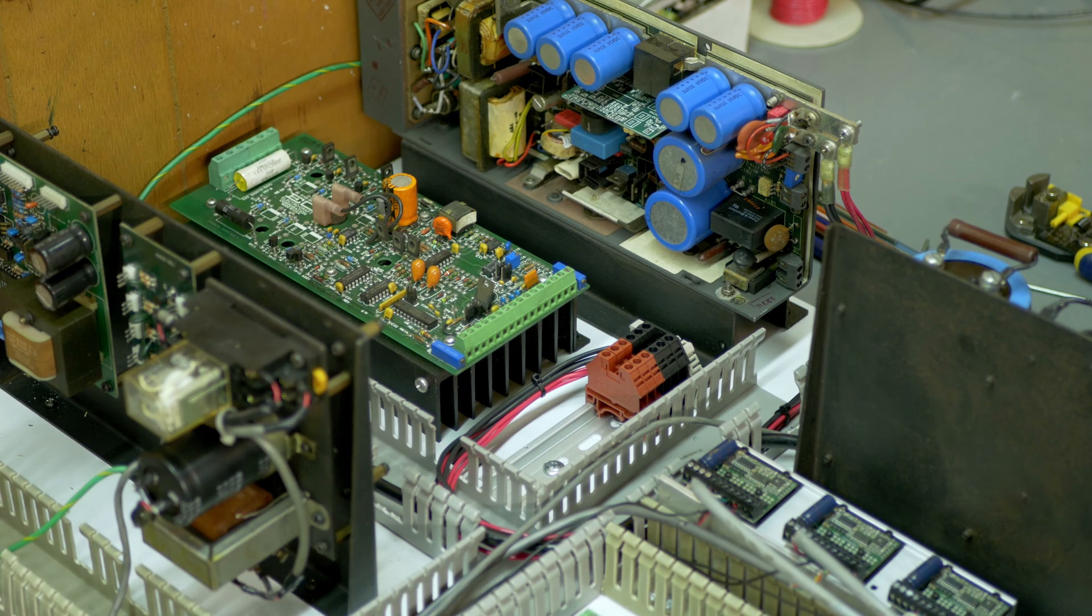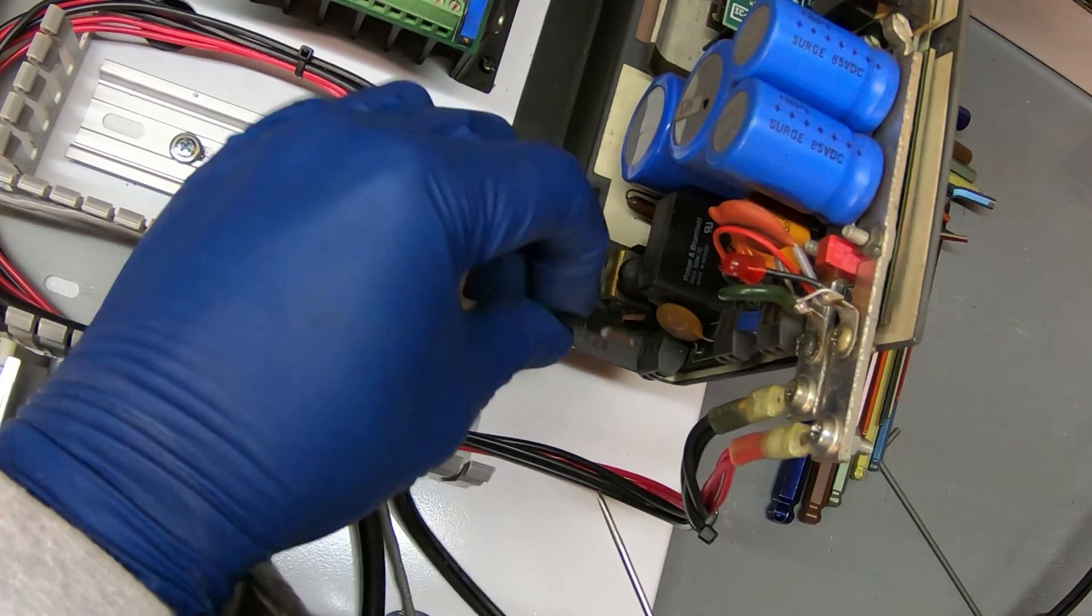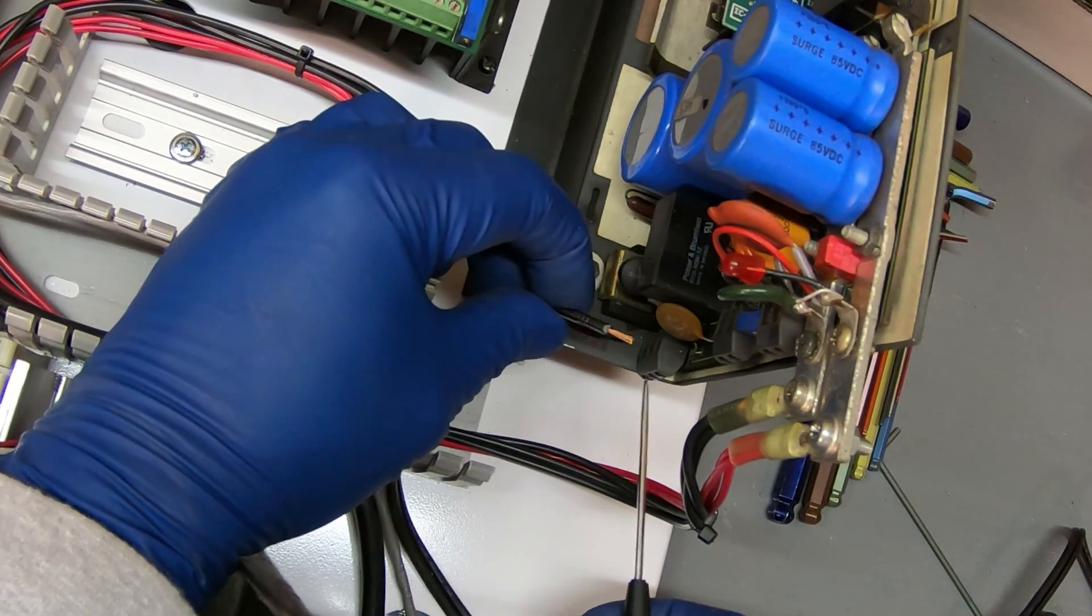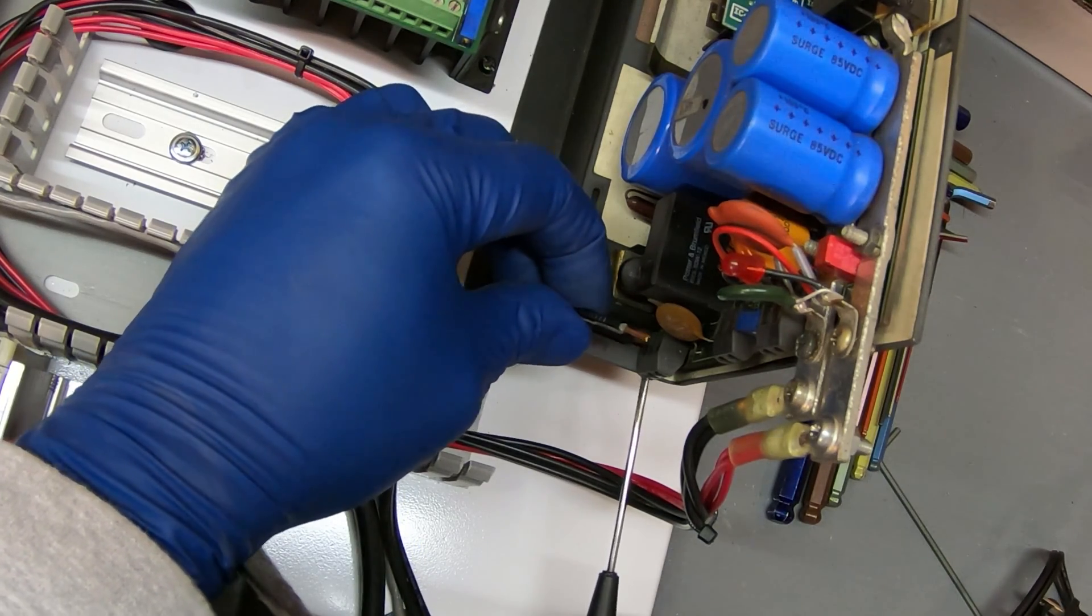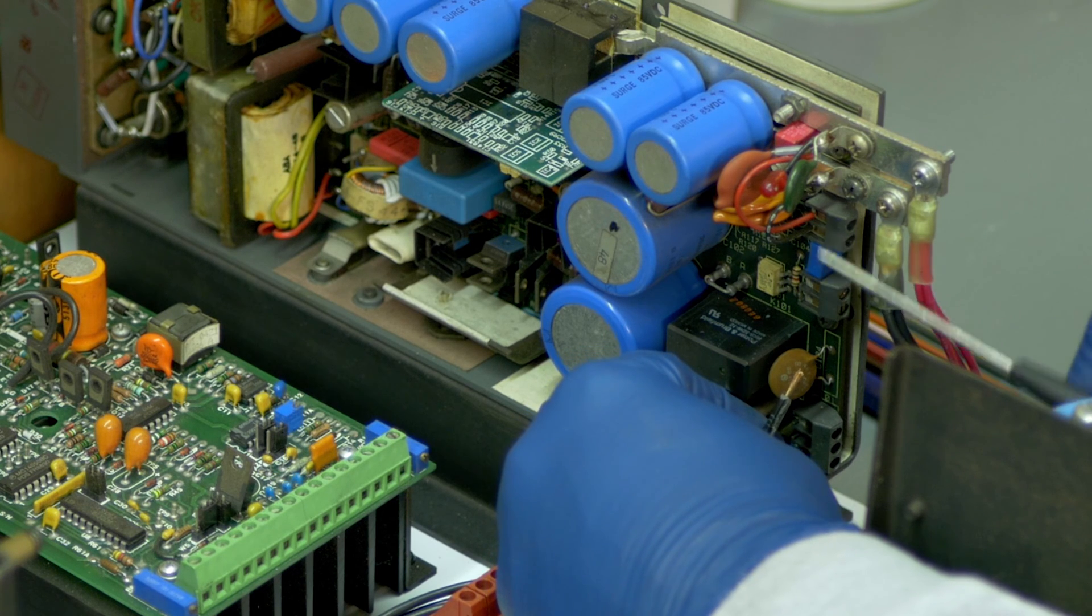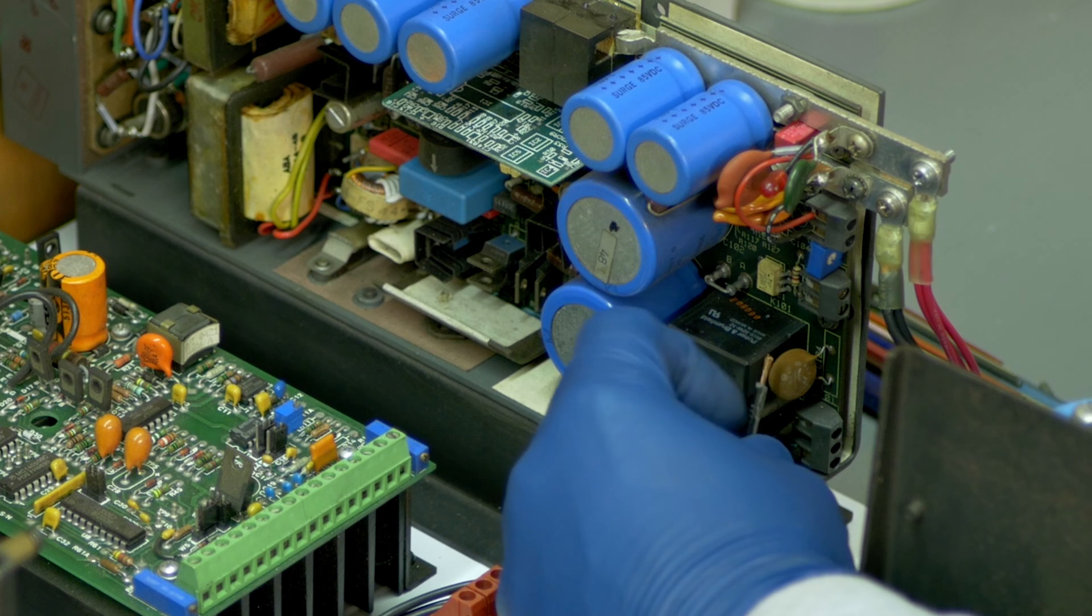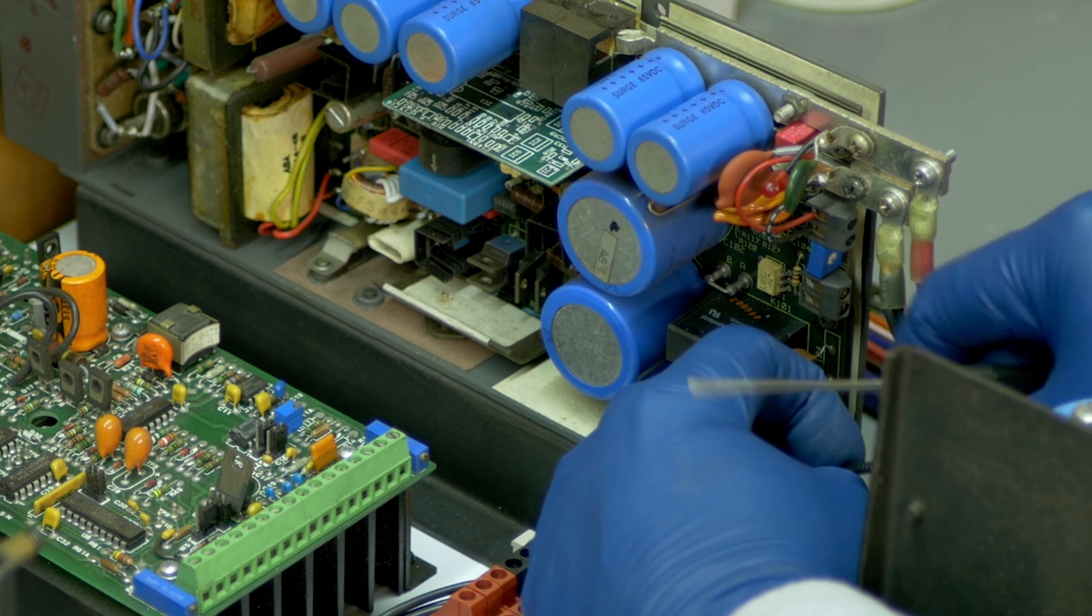First thing I want to do today is to get a cheater cord hooked up to this 48 volt power supply to verify that I actually have 48 volts coming out of it. I want to do that before I hook up any of the drives. This will just be a temporary connection. And I can also adjust this pot here if I need to, to get the voltage I'm looking for.